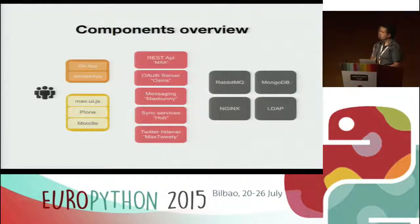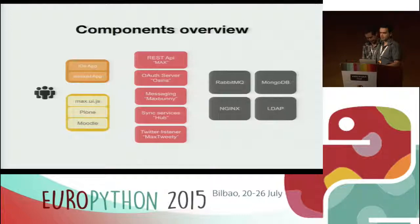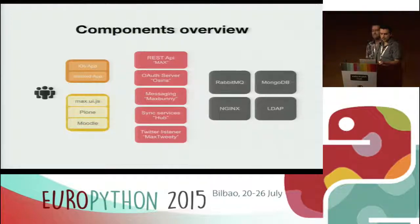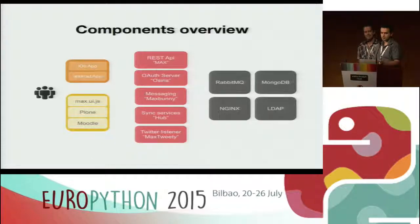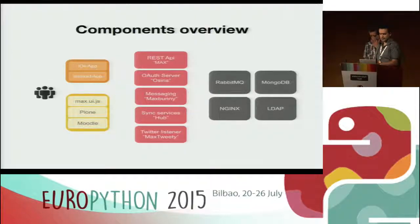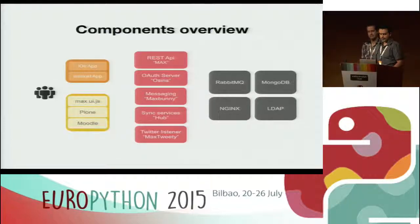We have three different kinds of components. On the left are the components with a user interface — what the user actually sees and uses — including mobile apps, integrations with systems like Plone and Moodle, and the JavaScript widget that can be embedded anywhere. In the center, in red, are the main software components we developed. On the right are the well-known backend software products we used.